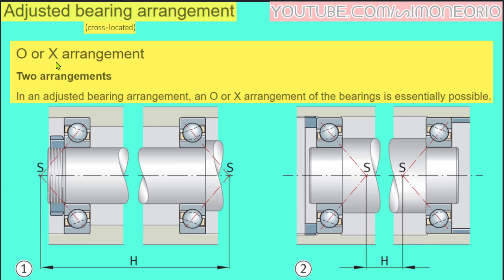O or X Arrangement. These are two arrangements. In an Adjusted Bearing Arrangement, an O or X Arrangement of the bearings is essentially possible. Number one is O Arrangement, and number two is X Arrangement.